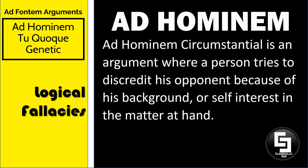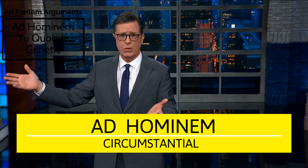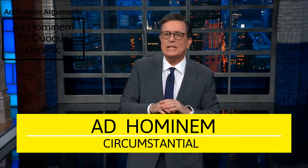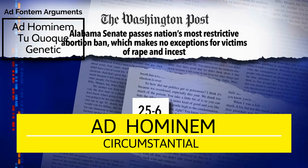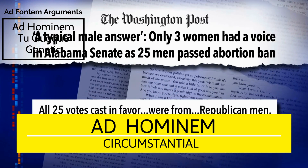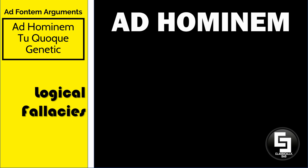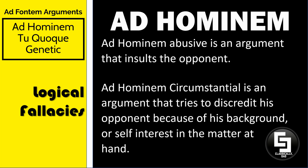Ad hominem circumstantial is an argument where a person tries to discredit his opponent because of his background or self-interest in the matter at hand. 'I think it's fair to say that this is the most restrictive law of its kind in America, which is why it barely squeaked by in the Alabama Senate 25 to 6, with all 25 votes cast in favor coming from Republican men.' Stephen Colbert draws attention to the fact that the 25 votes to end abortion in Alabama were all cast by men. The background of a person does not discredit the validity of an argument. Ad hominem abusive is an argument that insults the opponent. Ad hominem circumstantial is an argument that tries to discredit the opponent because of his background or self-interest in the matter at hand.